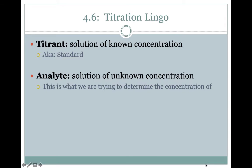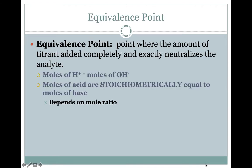Then there's the analyte — this is the solution of unknown concentration, the thing we're trying to determine the concentration of. And finally, there's the equivalence point. The equivalence point is the point where the amount of titrant added completely and exactly neutralizes the amount of analyte. At this point, the moles of H⁺ ions will be equal to the moles of OH⁻ ions. Those H⁺ and OH⁻ ions will have combined to form water. It's also true at this point that the moles of acid and base are stoichiometrically equal — meaning equal dependent on the mole ratio in the equation. If it's a one-to-one ratio, then the moles of acid are equal to the moles of base.